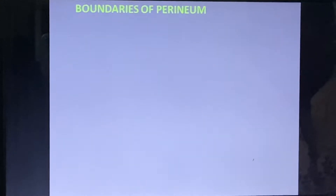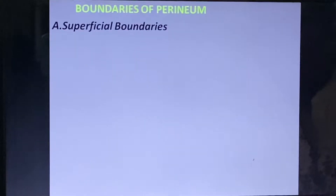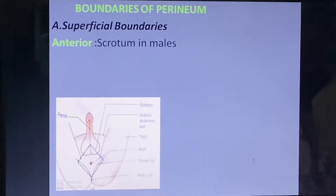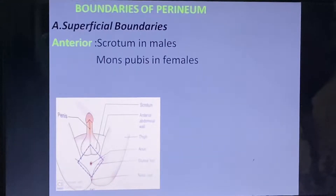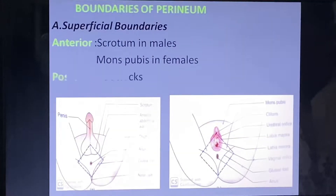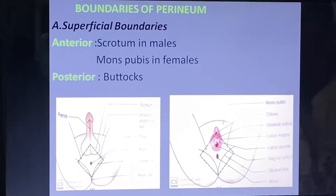The superficial boundaries of the perineum are: anteriorly it is the scrotum in males and mons pubis in females. The posterior boundaries are the buttocks in both males and females.